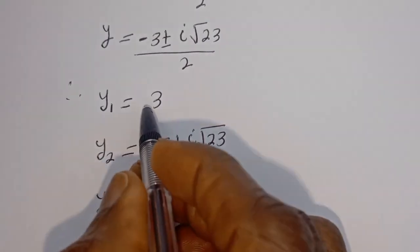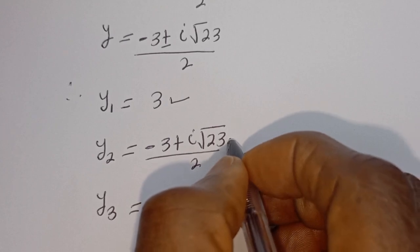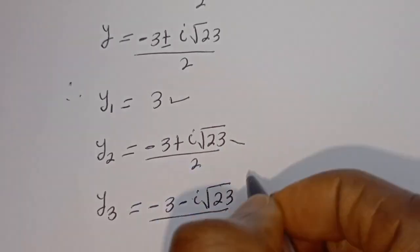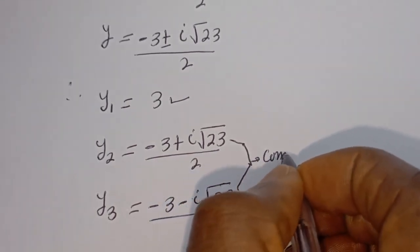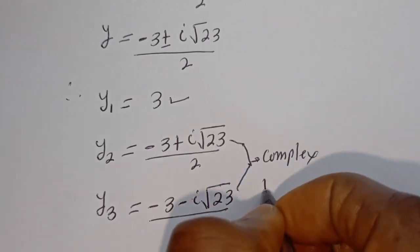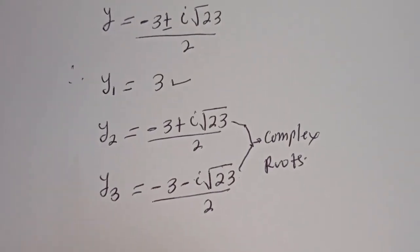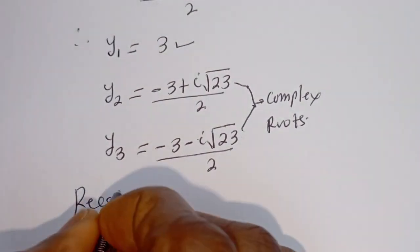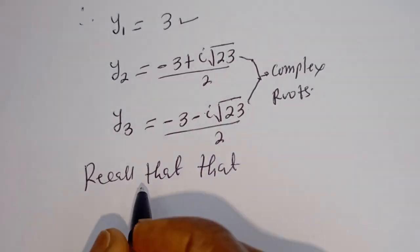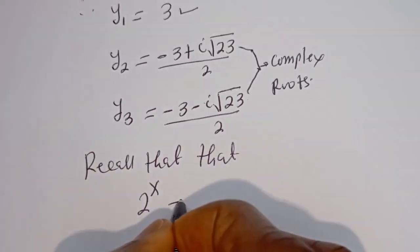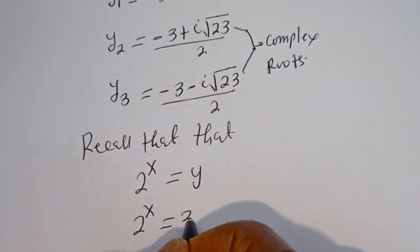You can see that y₁ equals 3 is the only real root, while y₂ and y₃ are complex roots. But recall that we have 2 to the power of x is equal to y. Then 2 to the power of x is equal to 3.